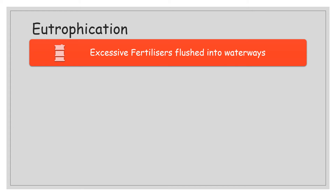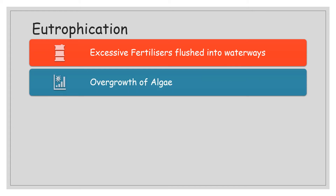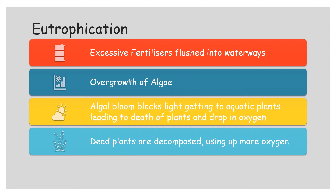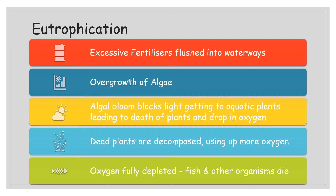Eutrophication is the aquatic ecosystem's response to extra nitrates from fertilizers or sewage. The process starts with excess fertilizers being flushed into waterways. The nitrates help algae grow and overgrow, causing an algal bloom that covers the surface, blocking light from reaching underwater plants. Those plants can no longer photosynthesize, so they die and oxygen levels drop. When they decompose, bacteria use up even more oxygen, fully depleting it — fish and other organisms then die too.